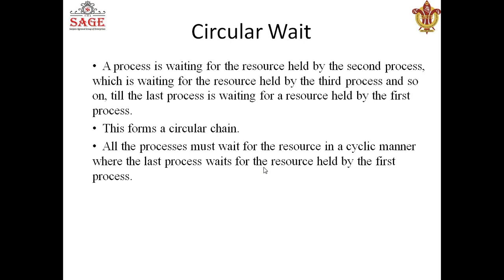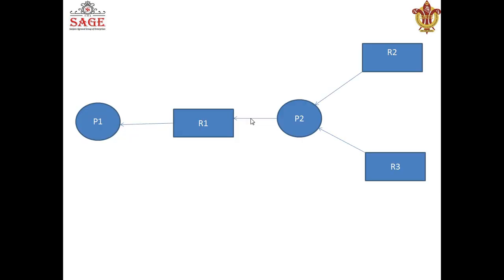For a deadlock to occur, all four conditions — mutual exclusion, hold and wait, no preemption, and circular wait — must be present. Only then can we say the system is in a deadlock condition. If we can deny or prevent any one of the four conditions from occurring, we can save our system from deadlock.